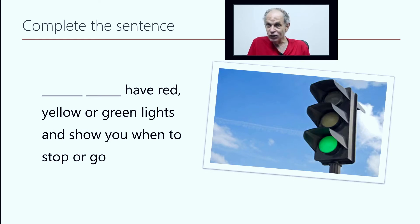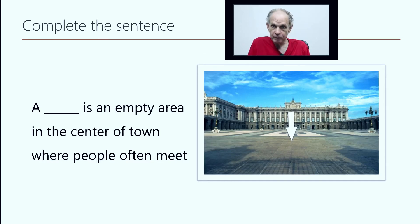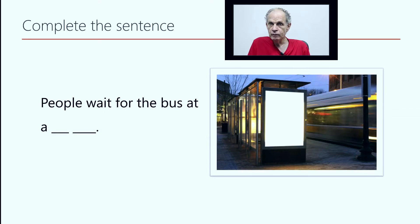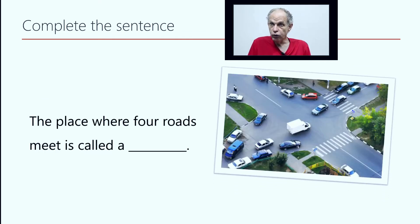Traffic lights have red, yellow, or green lights and show you when to go or stop. A square is an empty area in the center of town where people often meet. People wait for the bus at a bus stop. The place where four roads meet is called a crossroads.